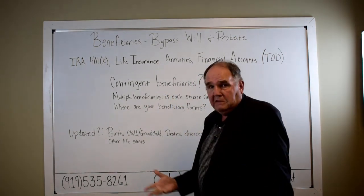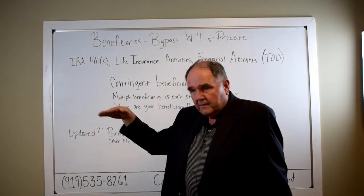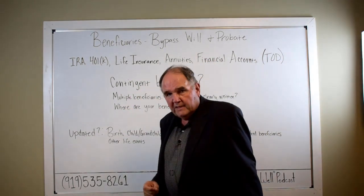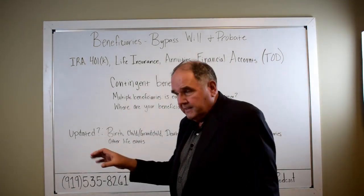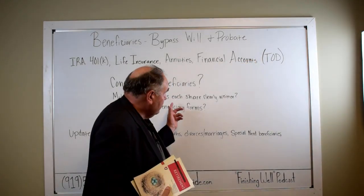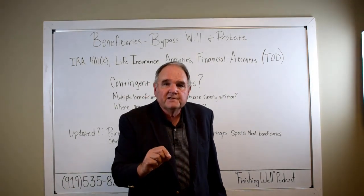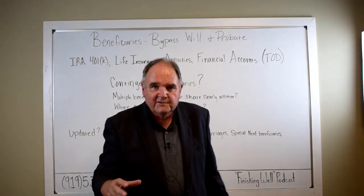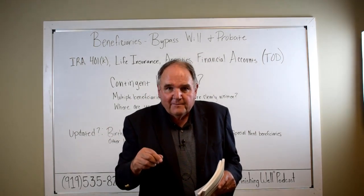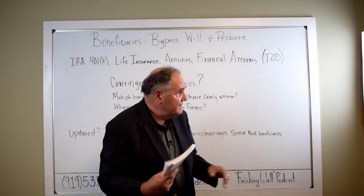You want to name contingent beneficiaries — that's simply who gets the money if the primary beneficiary is no longer here. If you have several primary beneficiaries, call me and we'll talk about getting it done properly. For multiple beneficiaries, each share needs to be written clearly. If using percentages, they all need to add up to 100 — there are only so many slices in a pie. You can use a third, a third, a third; it just needs to be clear.